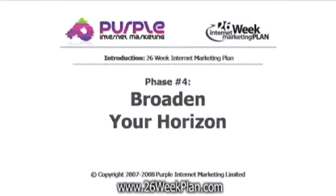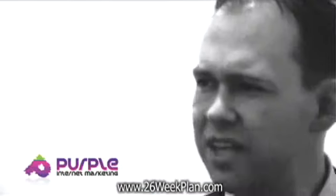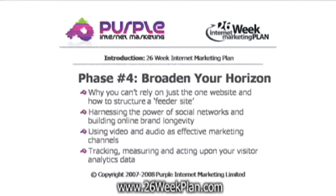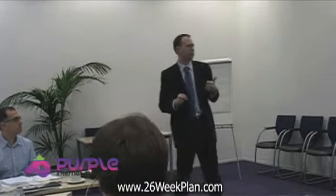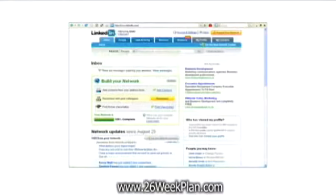Phase four is broaden your horizon. It introduces other new media methods of internet marketing — initially introducing new sites such as one-page sites that focus on a specific market segment, targeting visitors interested in one particular product within your portfolio, and driving more niche-specific traffic to your main website through these additional sites. It also covers harnessing the power of social networks like MySpace, Facebook, and LinkedIn, and building online brand longevity by targeting your audience where they interact.